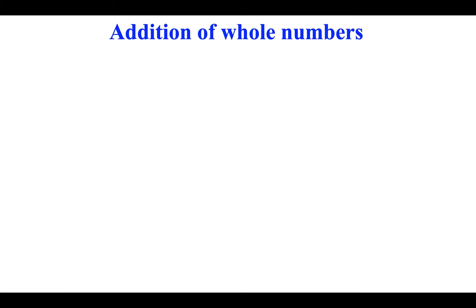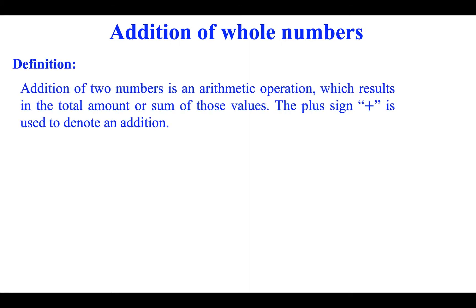Addition of whole numbers. Addition of two numbers is an arithmetic operation which results in the total amount, or sum, of those values. The plus sign is used to denote an addition.